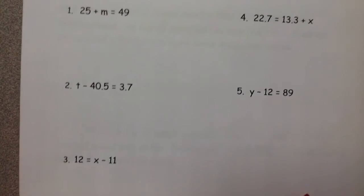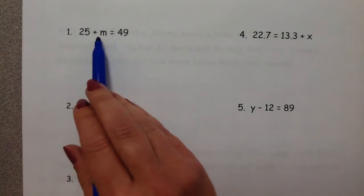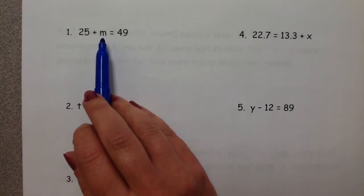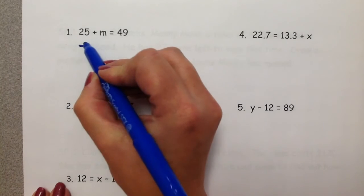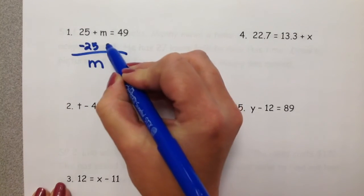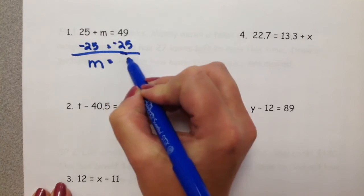So here are some examples that we went through today in class. Number one is 25 plus m is equal to 49. Again, we want to get the variable by itself. So we do the inverse operation. Instead of adding 25, we're going to subtract 25. That will leave us alone with our variable. But of course, if we do it to one side, we have to do it to the other.